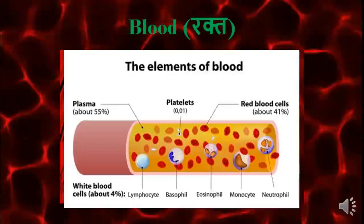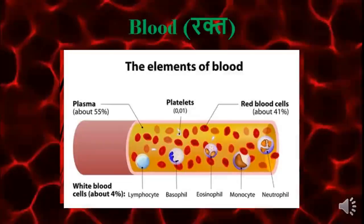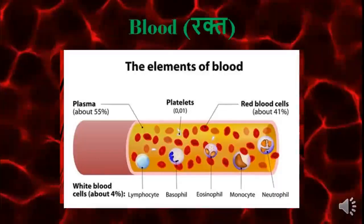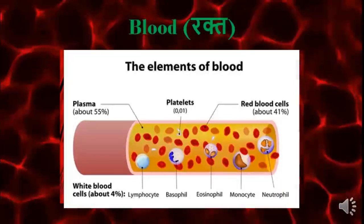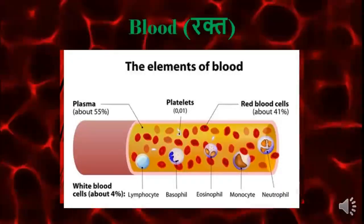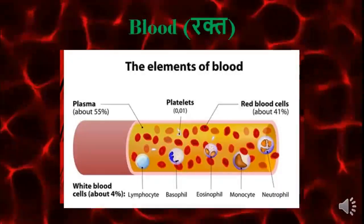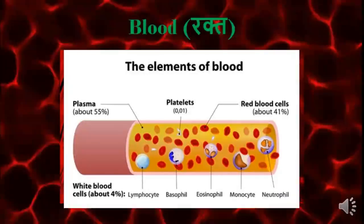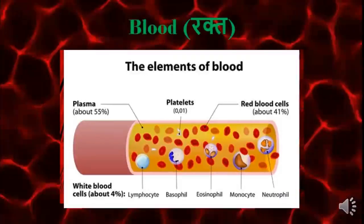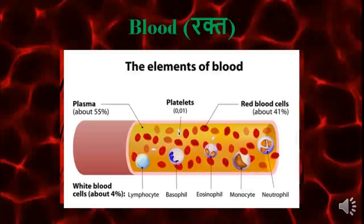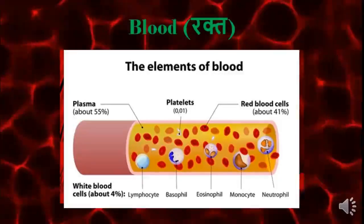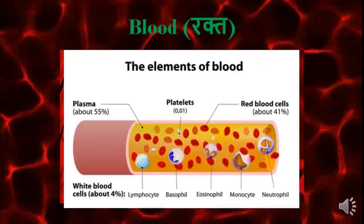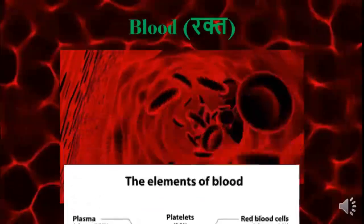Plasma is about 55%, platelets are very less, red blood cells are about 41%, and white blood cells are about 4%. White blood cells are of many types like lymphocyte, basophil, eosinophil, monocyte, and neutrophil.